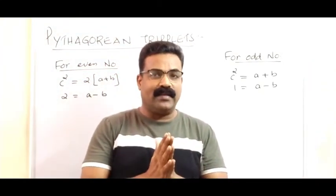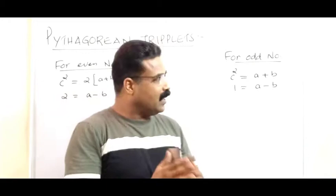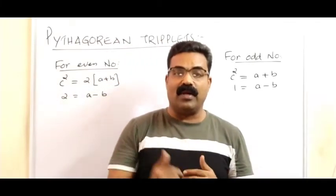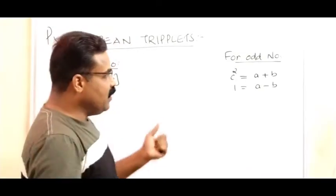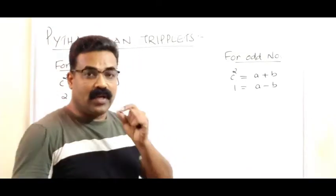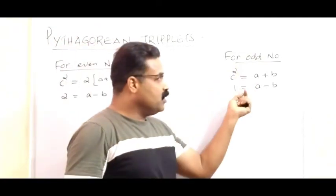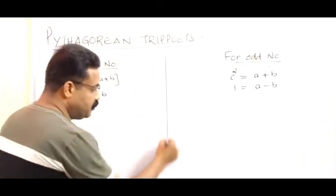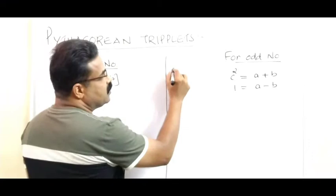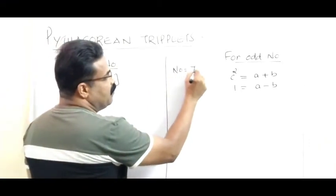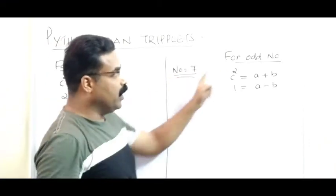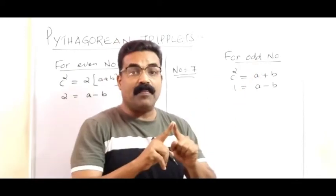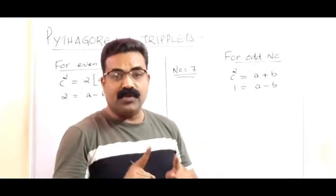For example, suppose the given number is 7 and you need to find the other two numbers. The given number is 7, which is an odd number, so we will use the odd number formula. A triplet means a group of three numbers, so we have to find the other two.